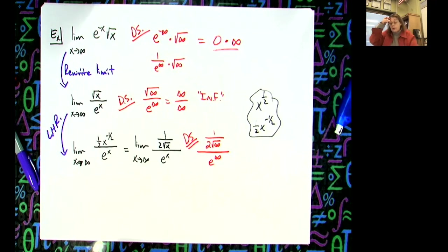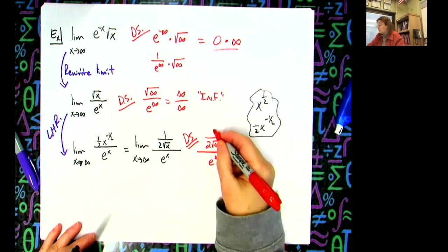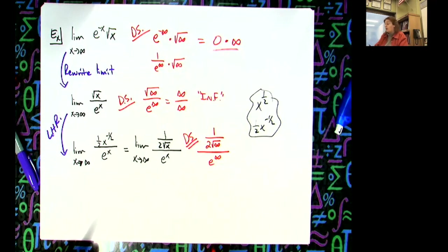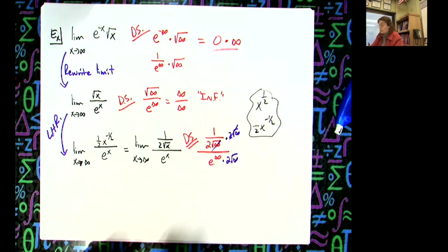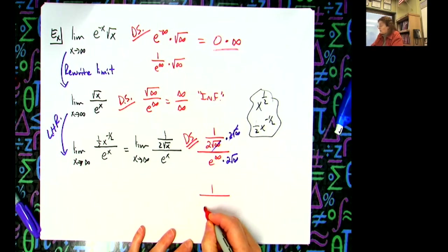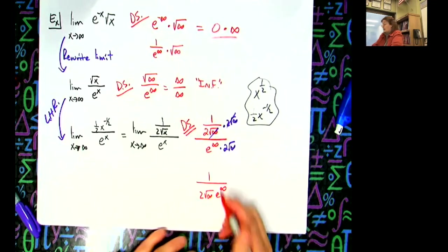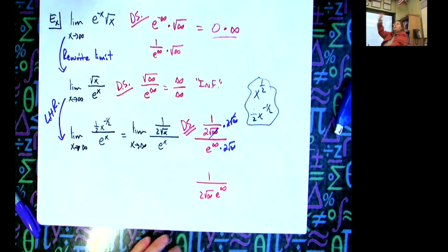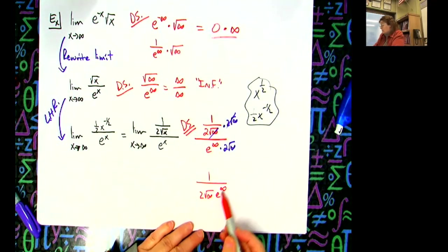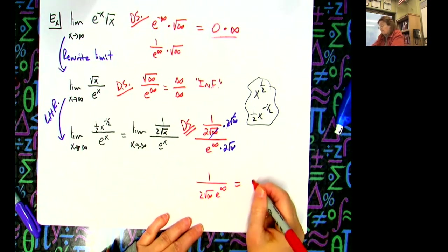This is a complex fraction, so let's multiply through by the least common denominator — two square root of infinity. That gives us one over two square root of infinity times e to the infinity. Looking at that denominator, it's a really big number times another really big number, so a constant over something approaching a really, really big number goes to zero. The limit is zero.